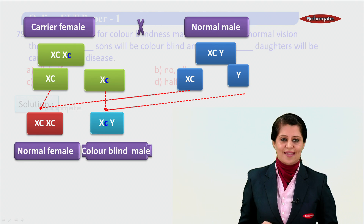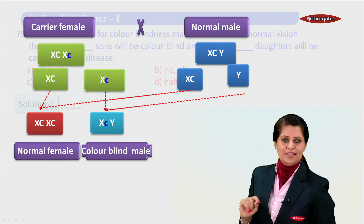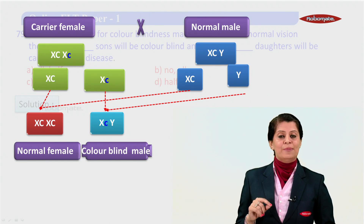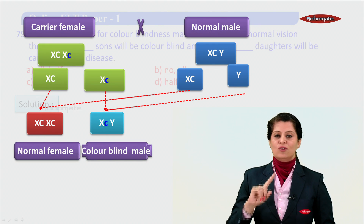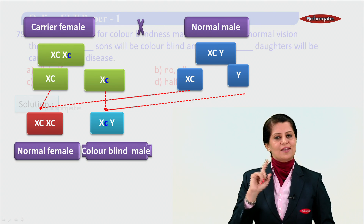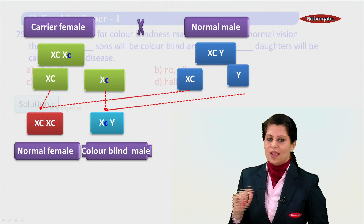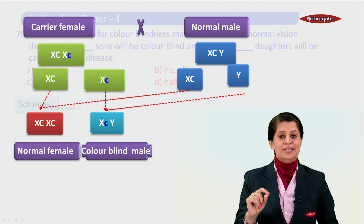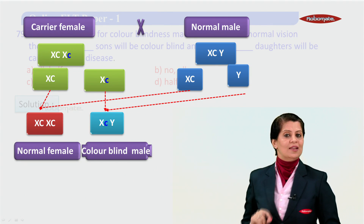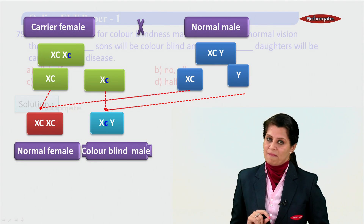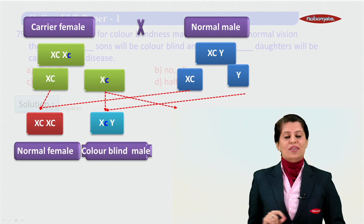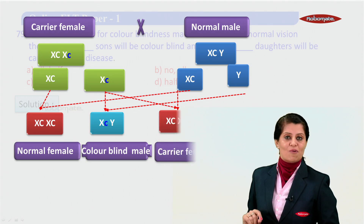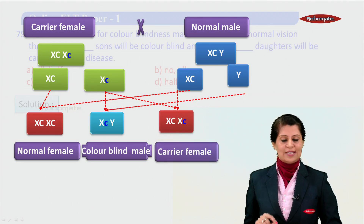The next combination gives us the genotype X^c and Y. Here you see there is a disease gene and there is no dominant capital C to mask the characteristic of this recessive gene — that means the male is going to be diseased, suffering, or colorblind.